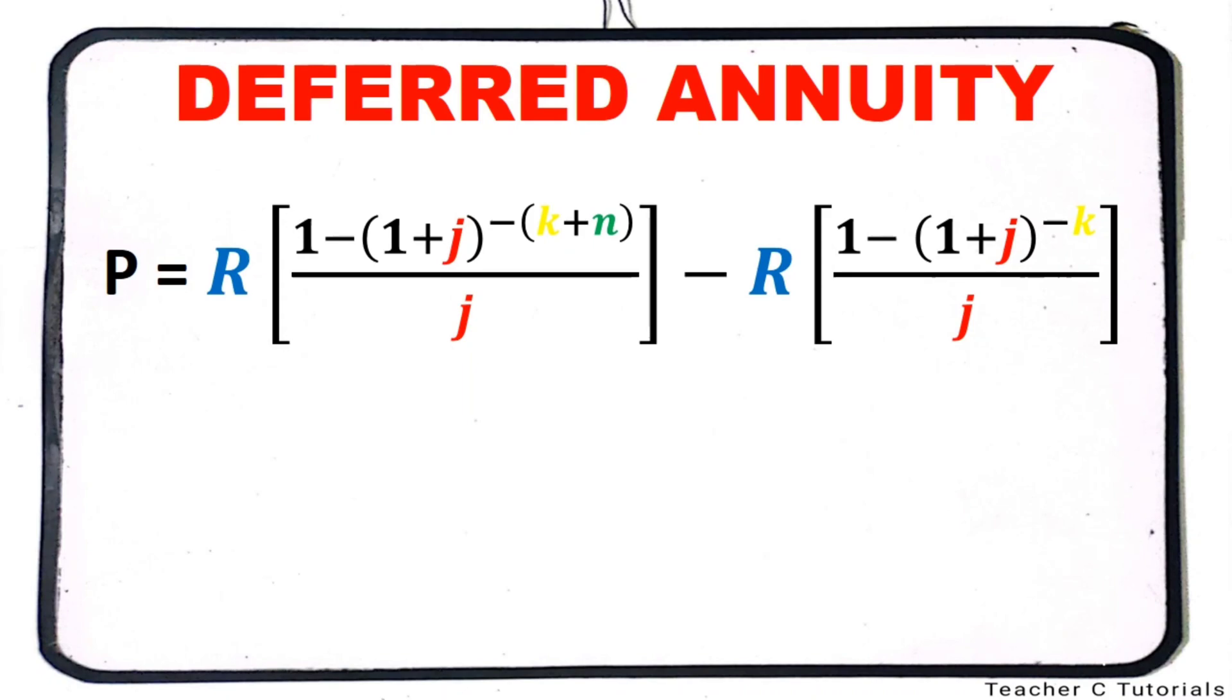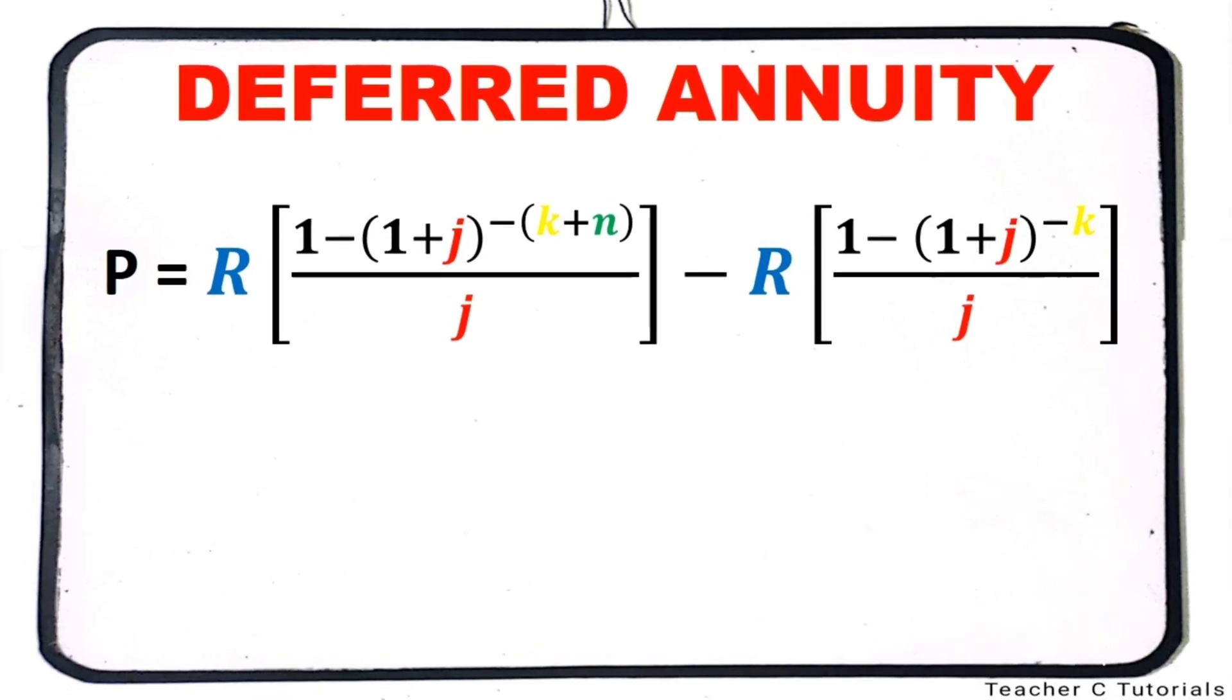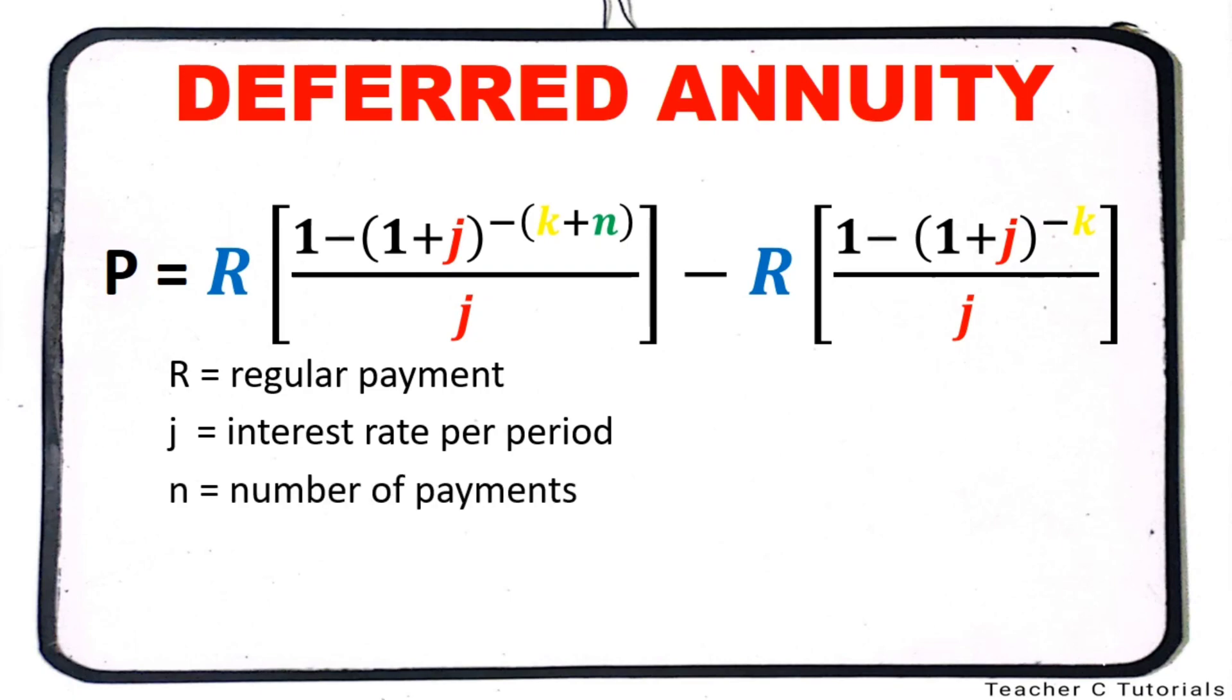Deferred annuity is a type of annuity where the payment doesn't start right away. This is the formula that we will use to solve its present value. Where R stands for regular payment, J for interest rate per period, N for the number of payments, and K for the number of conversion periods in the deferral.